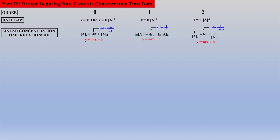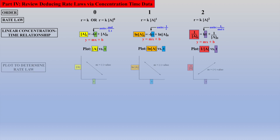Looking closer at these equations, we see they are all linear equations, where a plot of time on the x-axis versus either concentration of A, natural log of A, or 1 over the concentration of A on the y-axis will give a straight line.